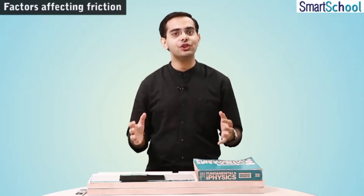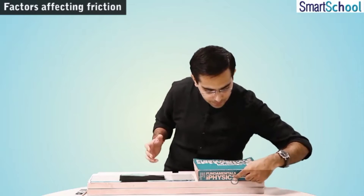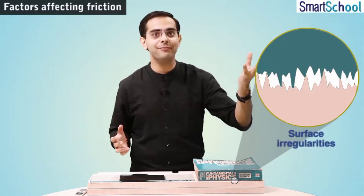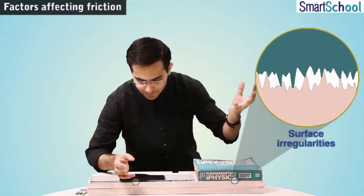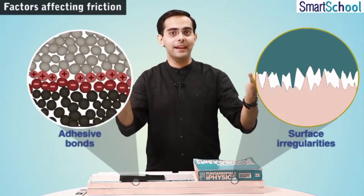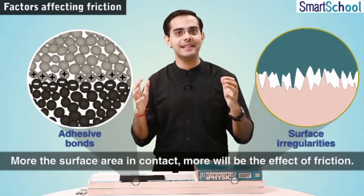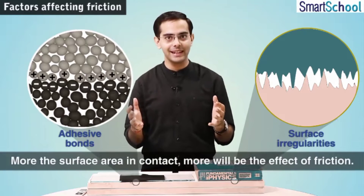Let us see whether the area of contact affects friction or not. So far, we have learnt that friction is caused by the surface irregularities or the adhesive bonds between the molecules at the contact surfaces. Therefore, it appears quite obvious that the more is the surface area in contact, the more will be the effect of friction.